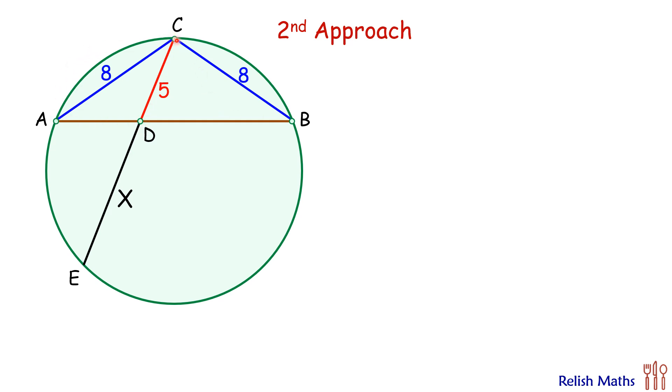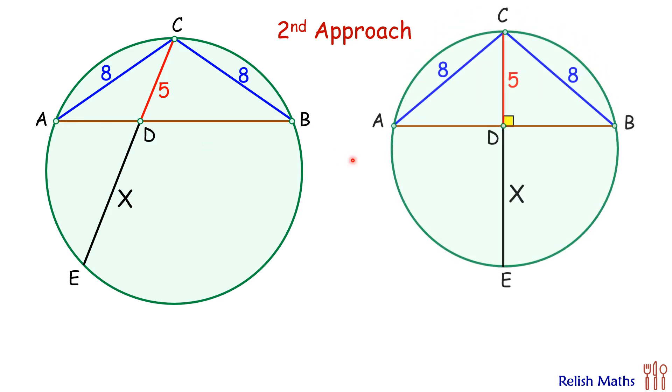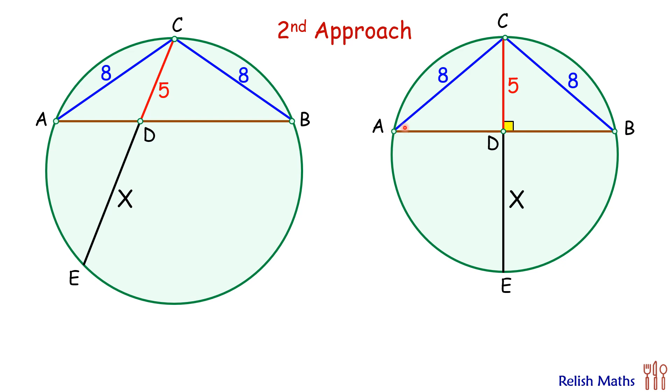So basically the circle size will increase or decrease but this triangle dimensions we can maintain. So similarly if we look at this figure, this is maintaining all the conditions of the original question, that is AC and CB is 8 and 8 cm.